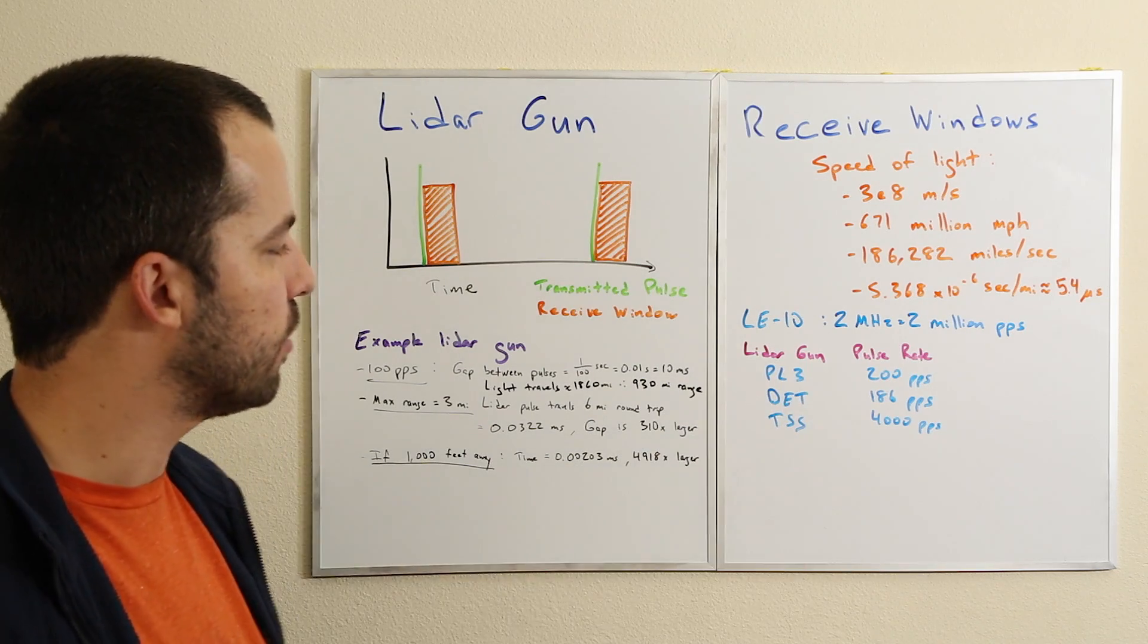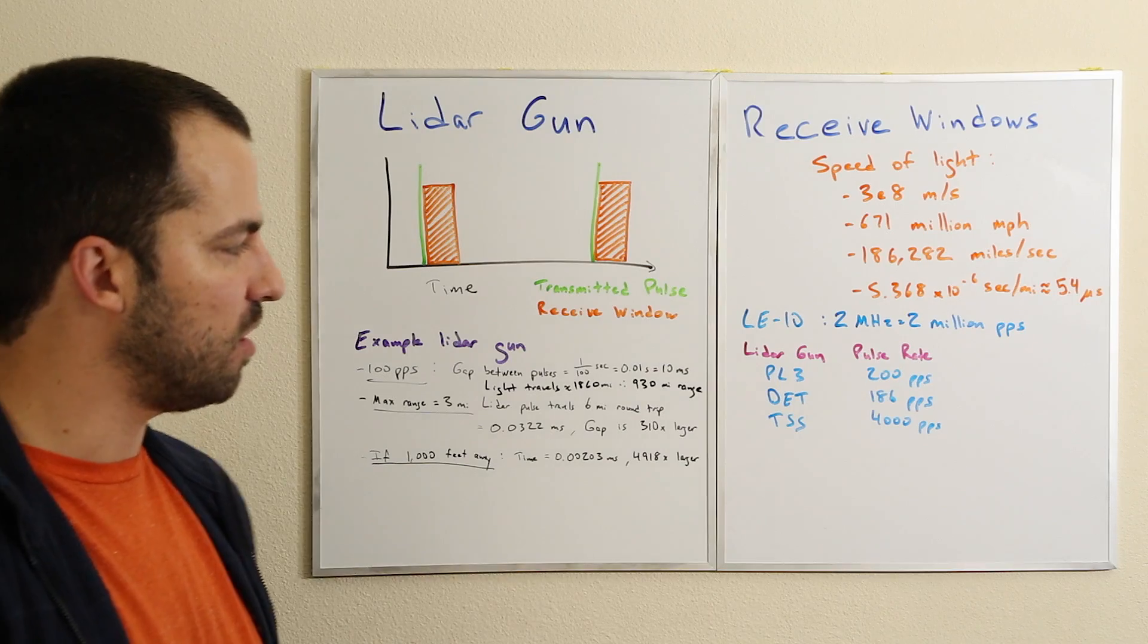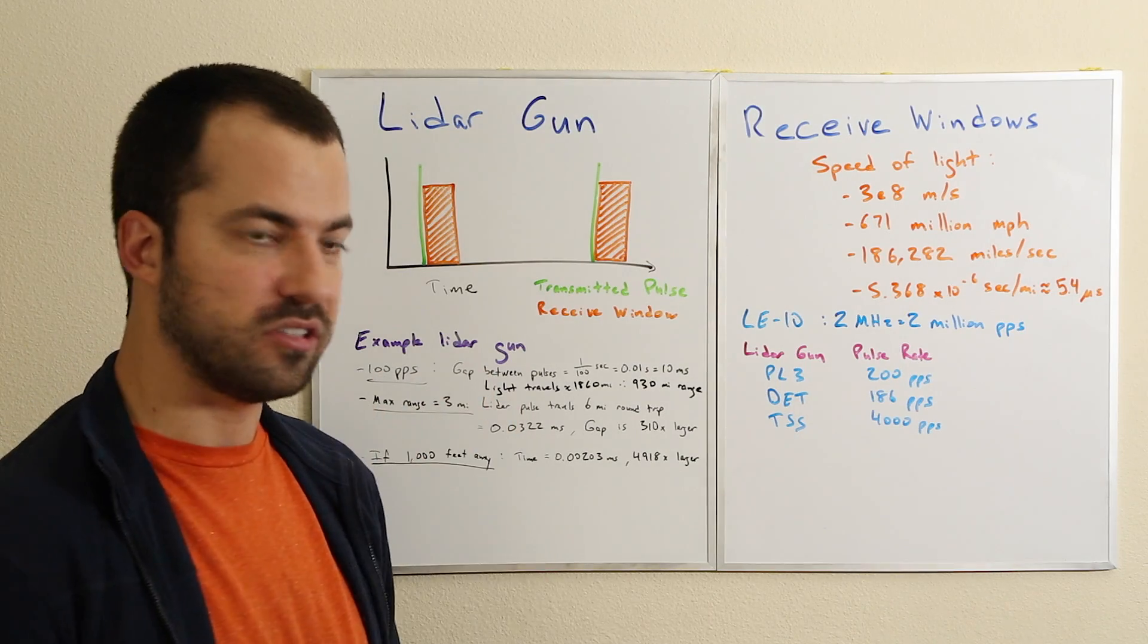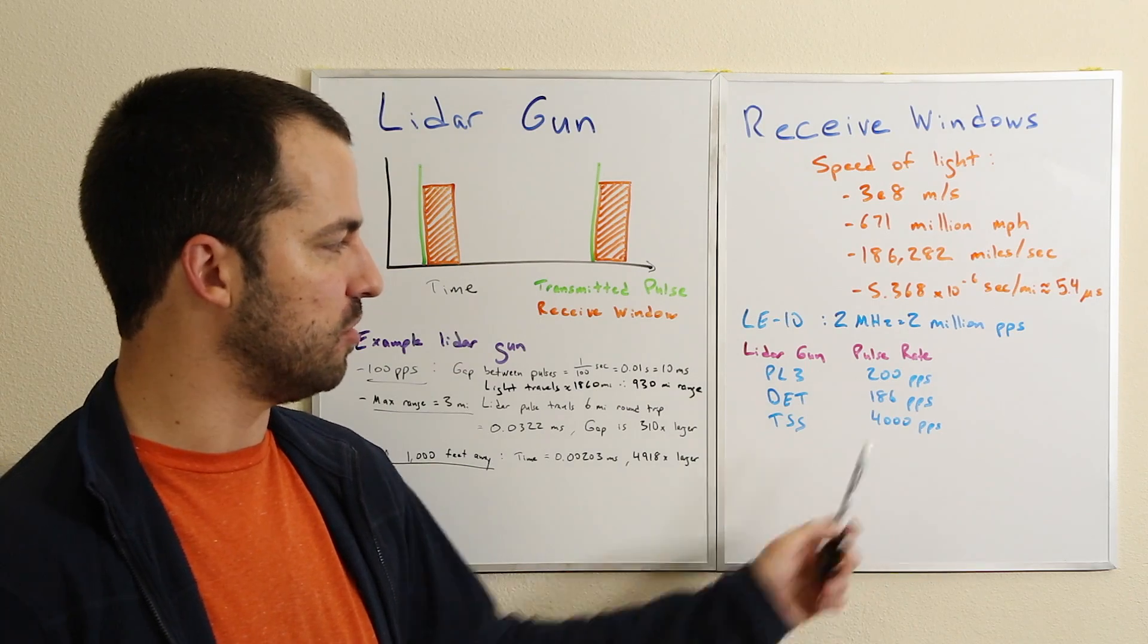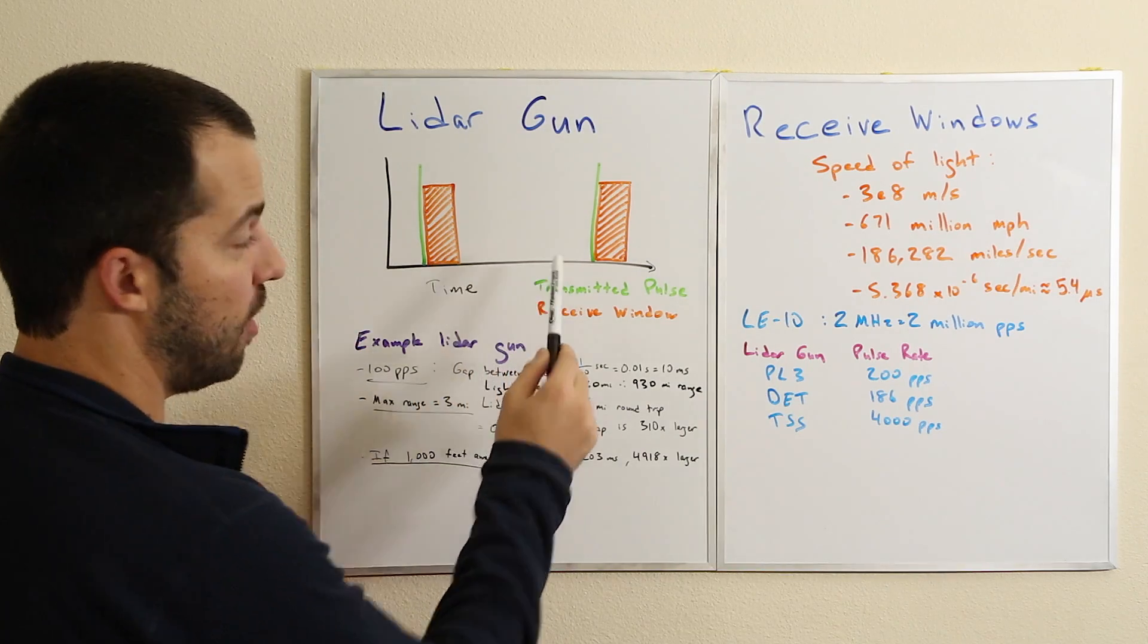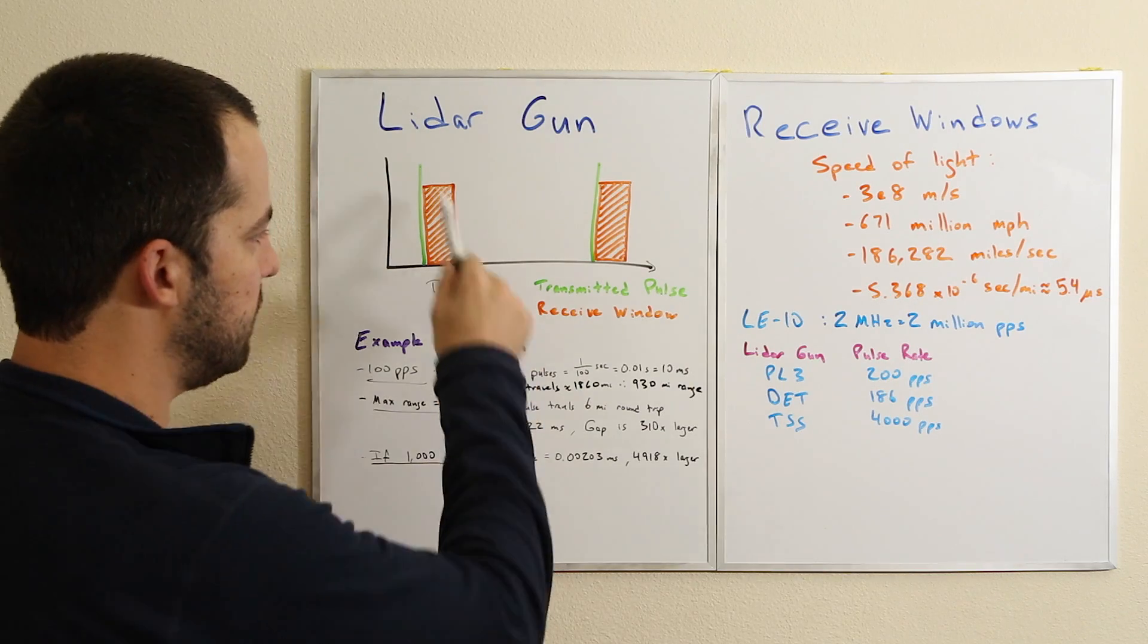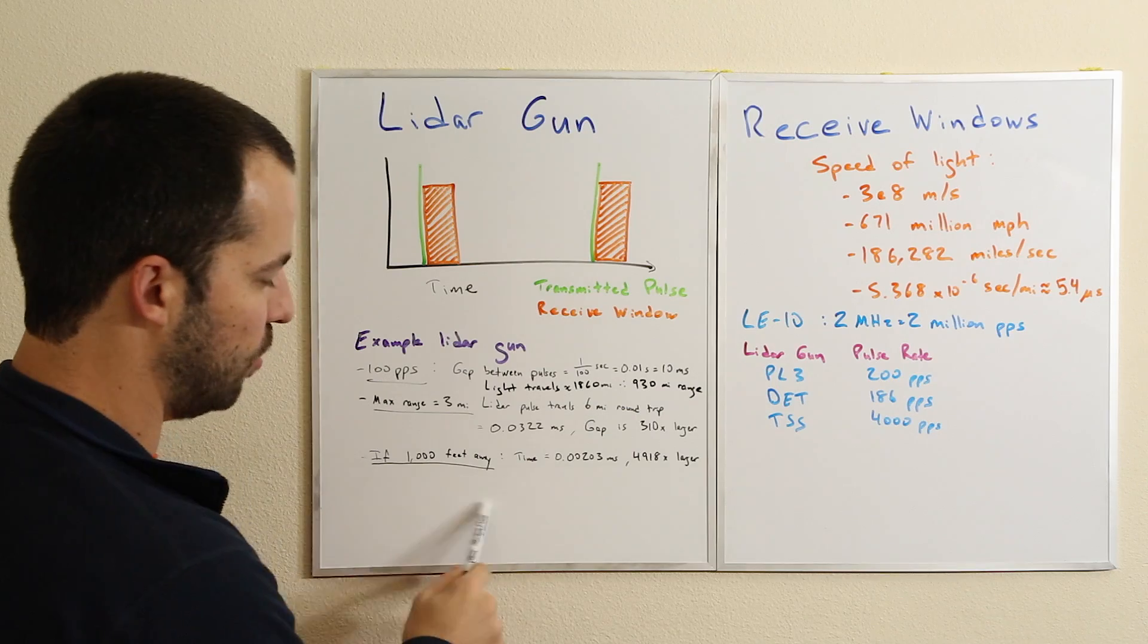If we look at the DragonEye Compact, it's a VPR gun. Its average pulse rate is about 186 pulses per second, so similar to the PL-3. The TruSpeed S actually has one of the fastest pulse rates. It shoots groups of pulses, and those groups are transmitting at 4,000 pulses per second.